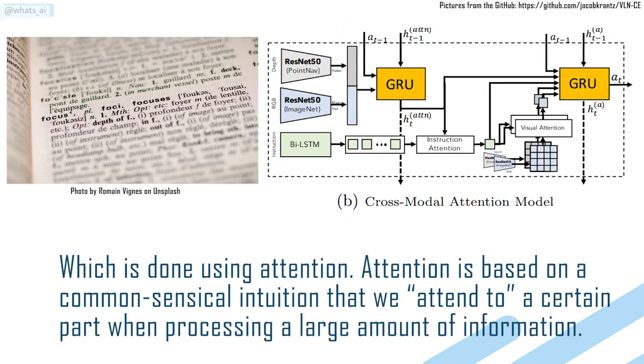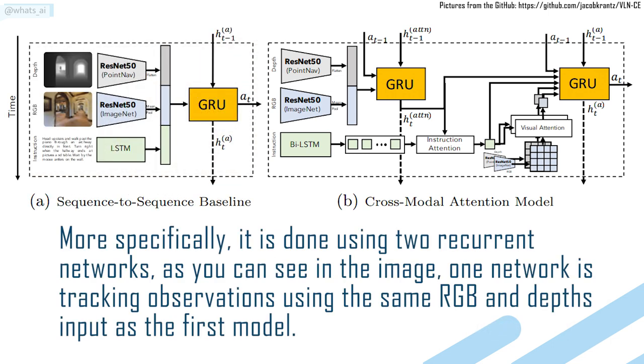Attention is based on a commonsensical intuition that we attend to a certain part when processing a large amount of information. More specifically, it is done using two recurrent networks.